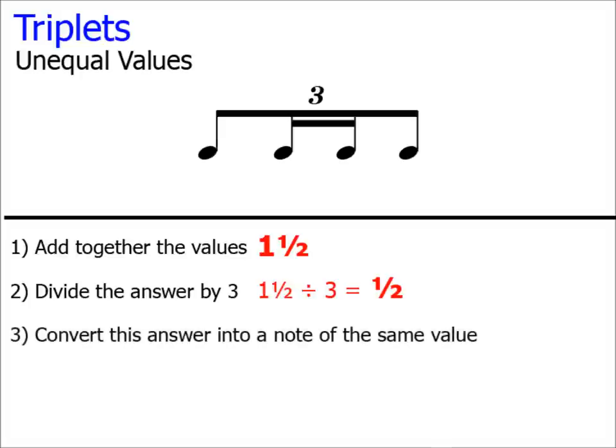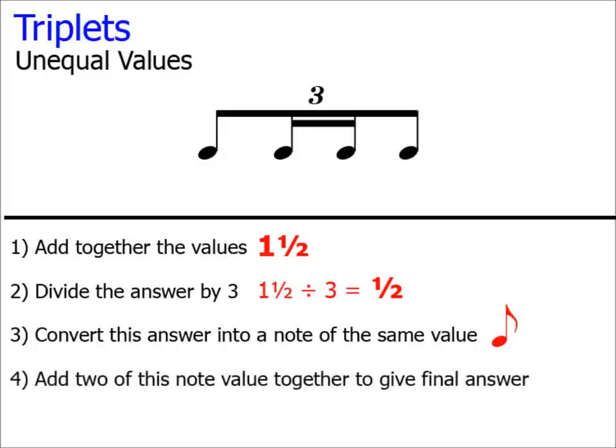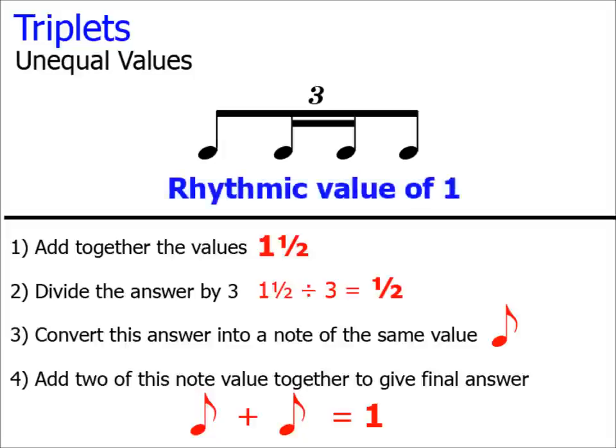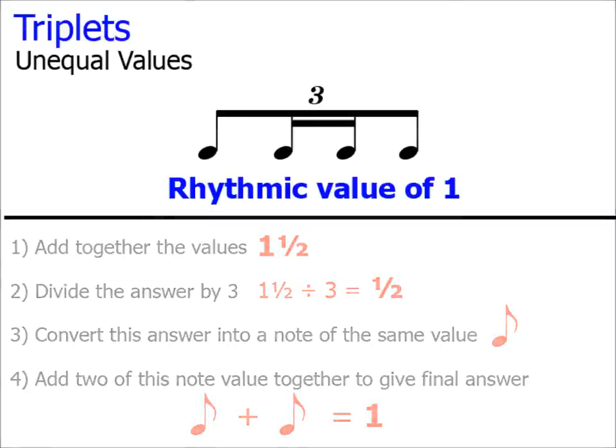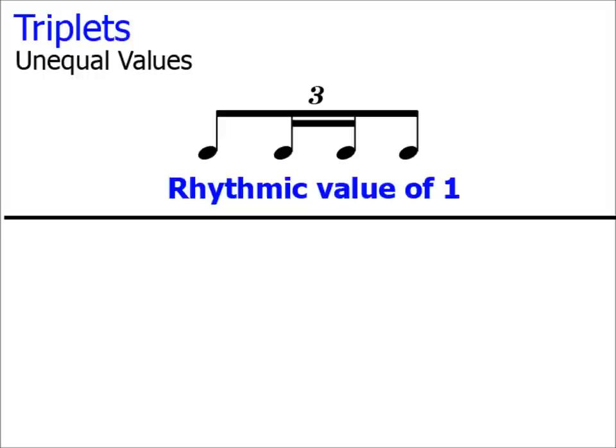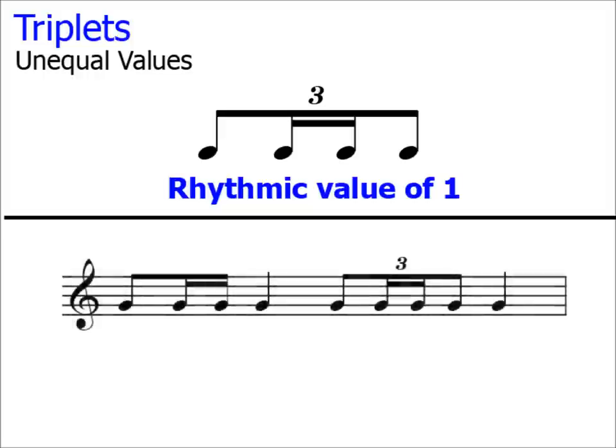Step 3, we convert the answer into a note of the same value. So as our answer is a half, the note which has a value of a half is a quaver. Step 4, we then add 2 of these notes together to give us the total value of the triplet. So a quaver plus a quaver equals a value of 1. We can therefore say that this group of triplets has a rhythmic value of 1. Another way of looking at it is that this triplet can be played in the time of a crotchet or a quarter note.